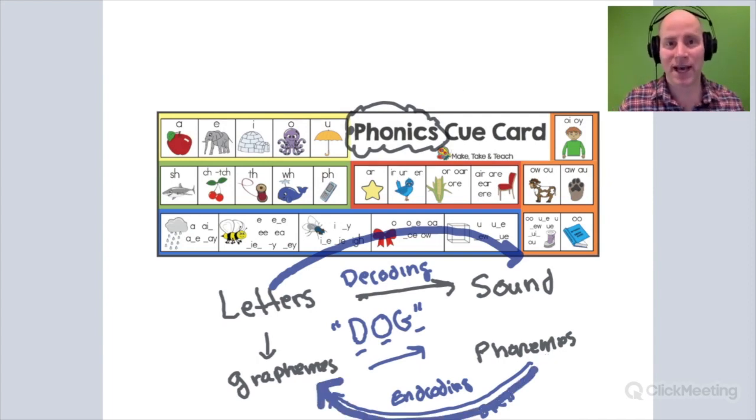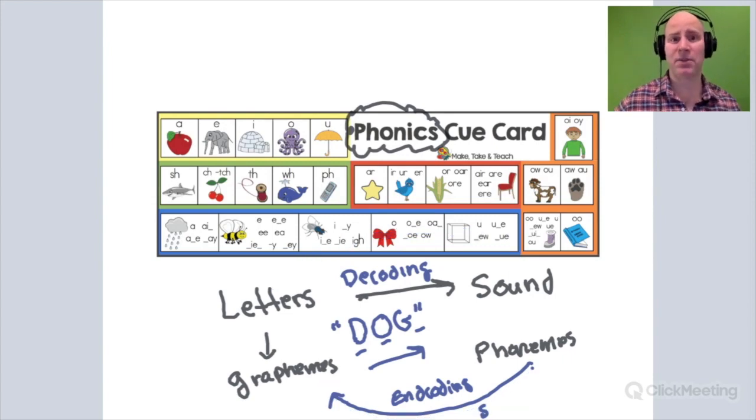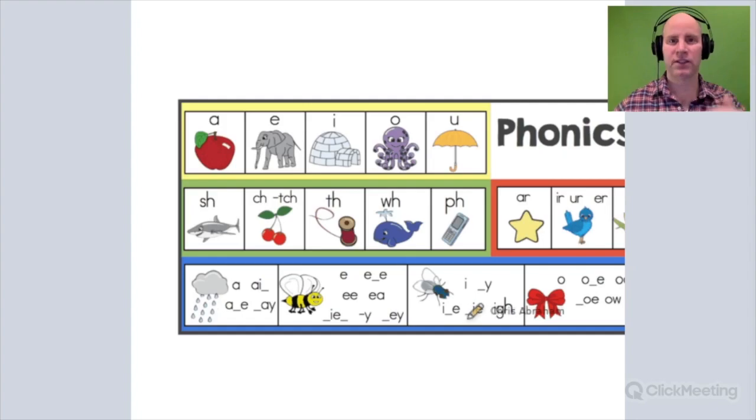The thing with English is that it's not one-to-one correspondence. There's a lot of sounds that match up with different graphemes, which makes it tricky. And one sound can be represented with multiple letters. So let's look a little closer.